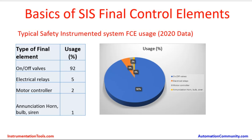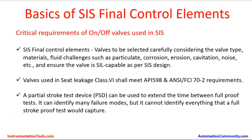This is data from 2020 figures showing the percentage of different types of SIS final control elements used across the industry globally. Automated on-off valves account for approximately 92% of usage. Electrical devices account for around 5%, motor controllers around 2%, and annunciation devices such as horns, bulbs, and sirens less than 1%. This typical data was collected by the UK HSE department.